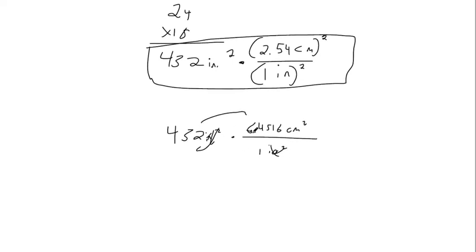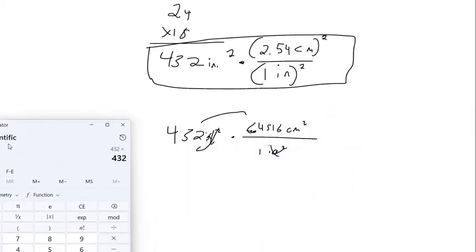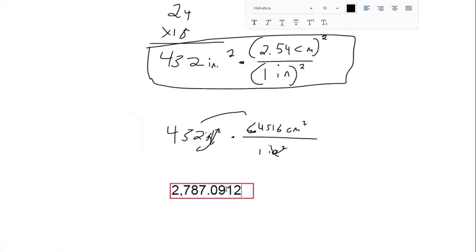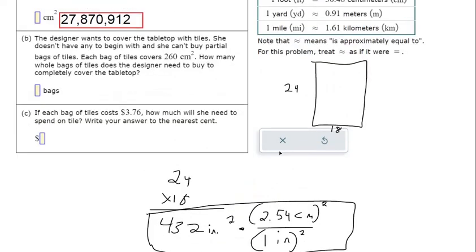I had to redo this part of the video. It's my messy handwriting. That's a decimal there. So we've got 432 square inches times 6.4516 square centimeters over square inches. Square inches cross cancel, and we're left with this many centimeters squared.